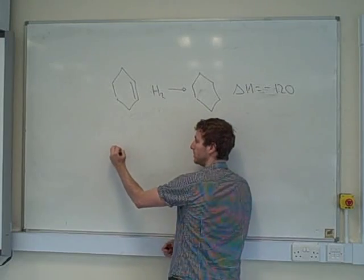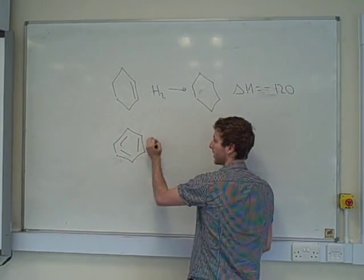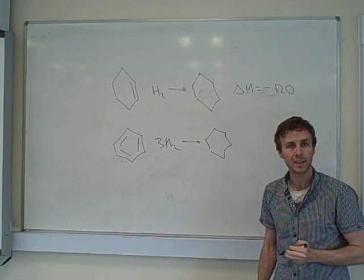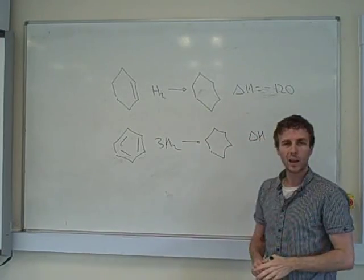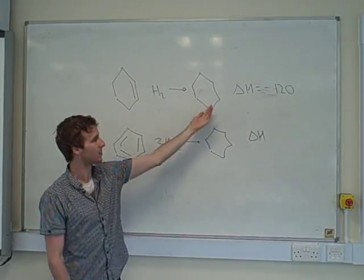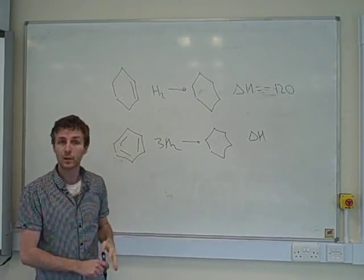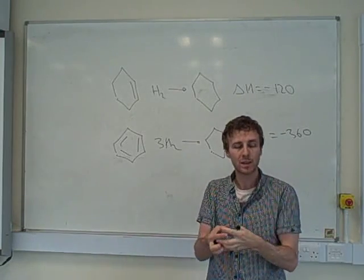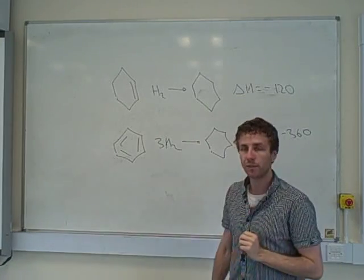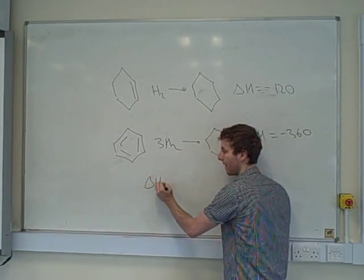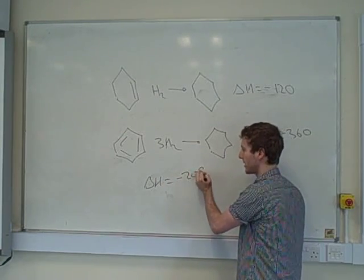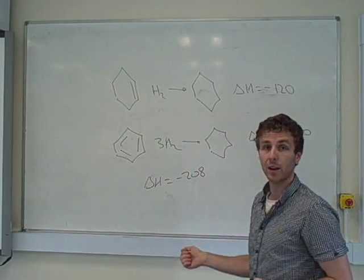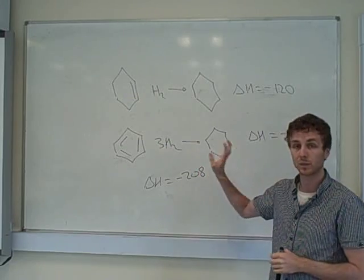So, according to Kekule's model, which looks like this, as I have three double bonds, if I was to fully hydrogenate this, my delta H, well, if to break one double bond it takes minus 120, then surely to break three double bonds it would take minus 360. But when actual benzene was studied and investigated, we found out the enthalpy of hydrogenation for actual benzene was minus 208. So, again, it's not quite what Kekule said, and that was the final nail in the coffin lid. That's what made people stop believing his theory.